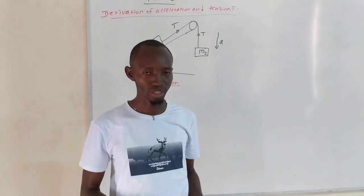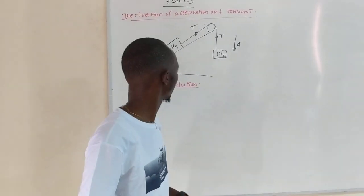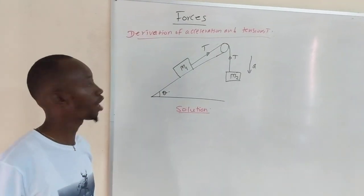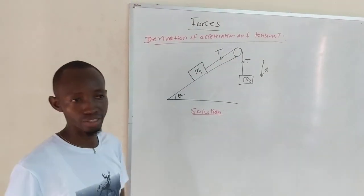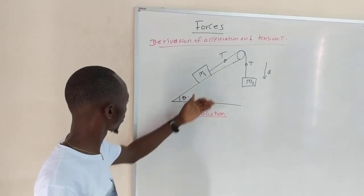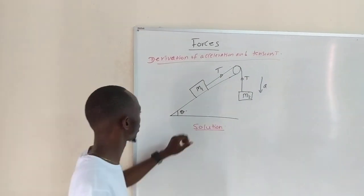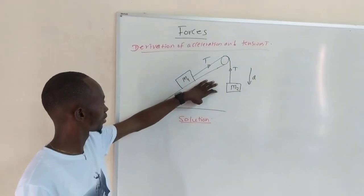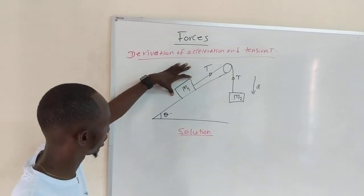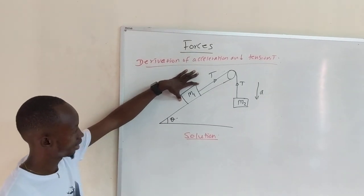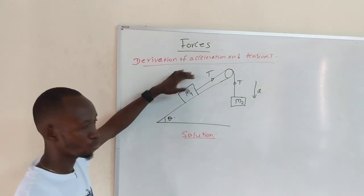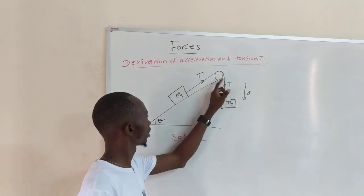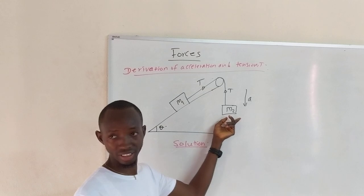Good day all, I am Ekonter from SkyMath. Today's lesson is simply to show how we can derive the acceleration ratio A and tension T from this diagram. So we are given the inclined plane. We have an object placed there — let's name that object as mass M1. We also have another object on the string, which is mass M2.